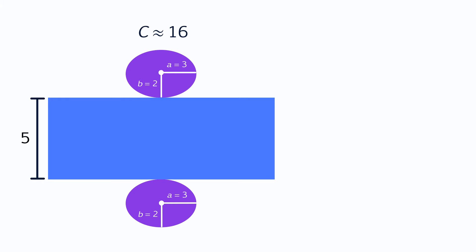By cutting and unfolding the cylinder, the curved surface becomes a rectangle, like with circular cylinders. So the total surface area of the cylinder is the area of the two ellipses plus the area of this rectangle. This is given by the formula: surface area equals 2 times the area of the base plus the circumference of the base times the height of the cylinder.